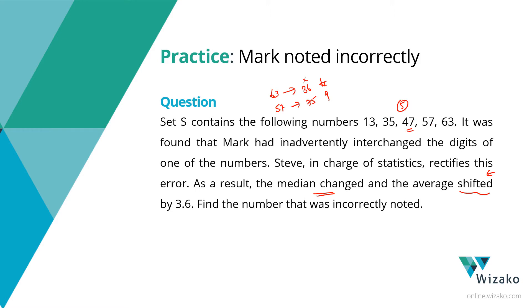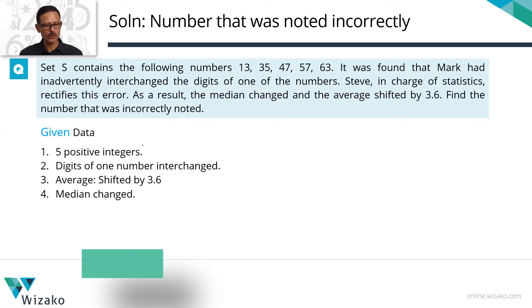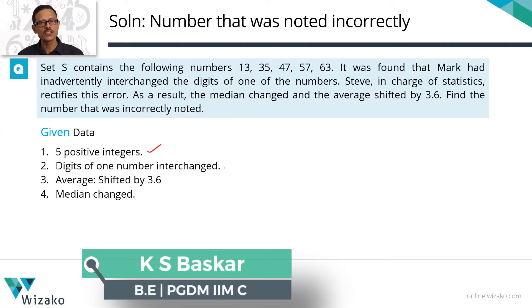Quickly jot down all this data given to us. Talking about five positive integers, digits of only one of these numbers has been interchanged. What happened on account of that? One, the average shifted by 3.6. Two, the median also changed.